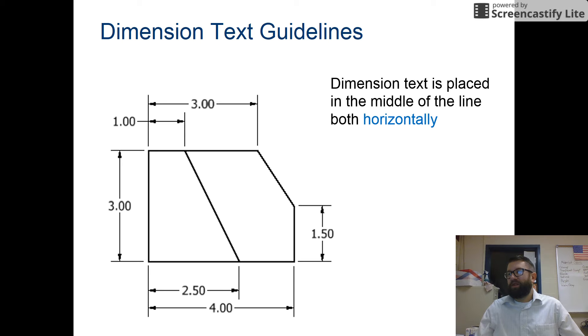Dimension text is placed in the middle of the line, horizontally, as shown here. And vertically. So we want the number directly in the middle, both ways.